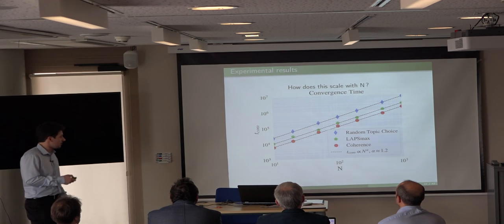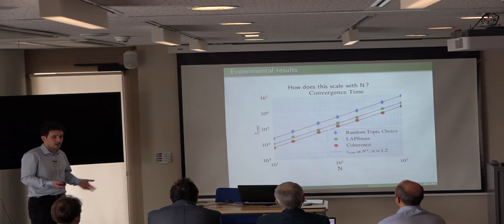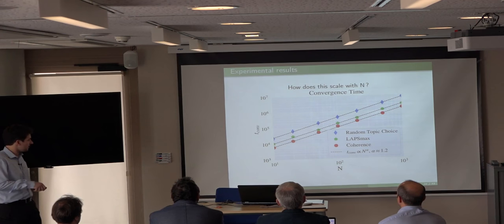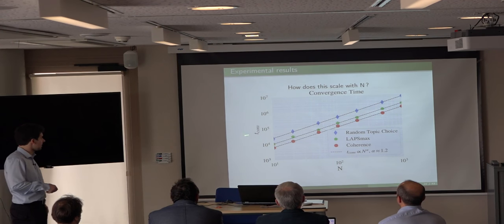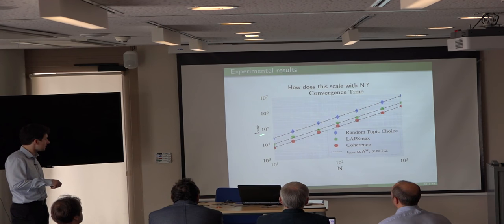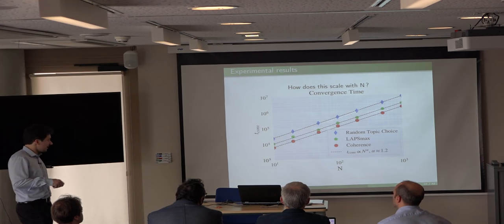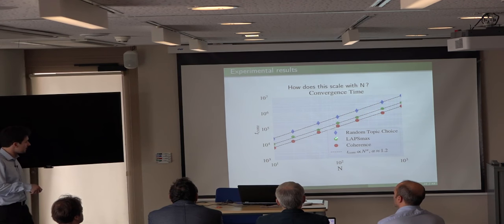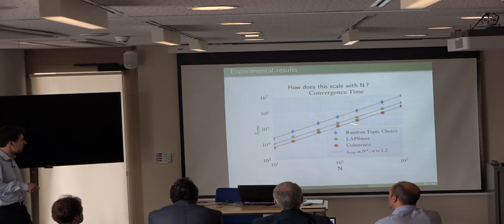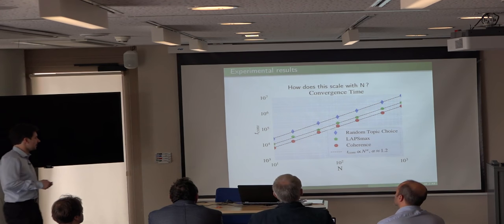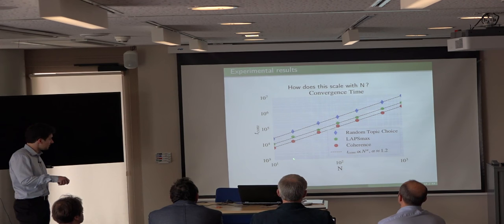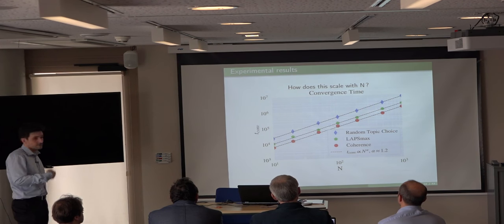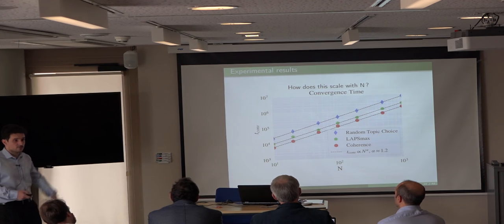How do these behaviors scale with population size? On a log-log representation of convergence time against population size, we get lines — so they follow a power law. Lapse max and coherence are way below the random topic choice curve, and this behavior is robust to increases in population size.